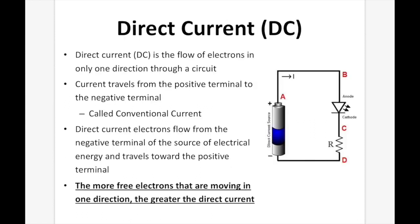Direct current is the flow of electrons in only one direction throughout a circuit. The electrons leave the battery and the current goes in a single direction. Current travels from the positive terminal to the negative terminal. Now, electrons actually flow in the opposite direction — electrons go from the negative terminal to the positive terminal. The more free electrons that are moving in one direction, the greater the direct current.